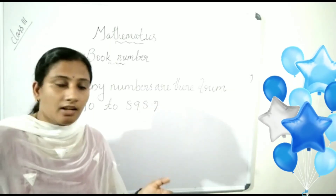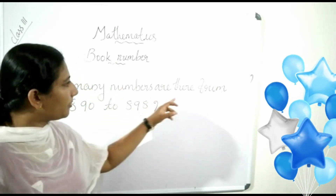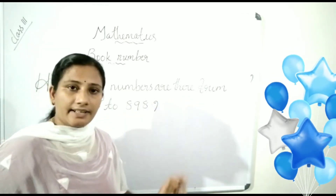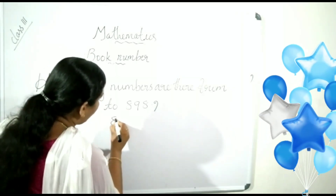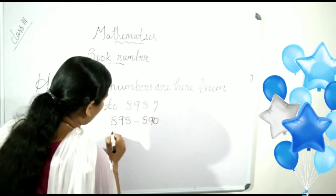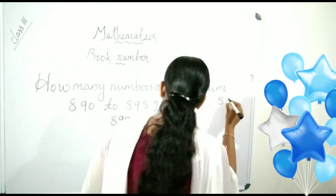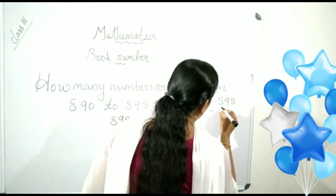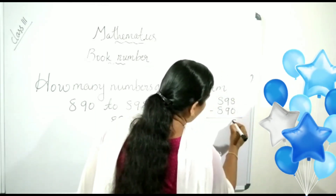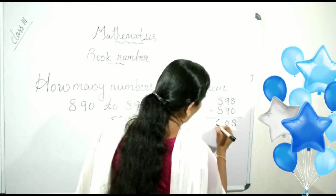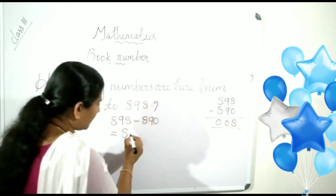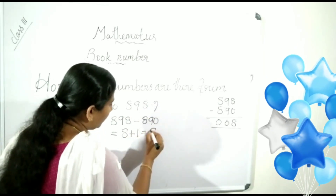Look at another question. How many numbers are there from 890 to 898? Then, first step: 898 minus 890. 8 minus 0 is 8. 9 minus 9 is 0. 8 minus 8 is 0. So, what is the answer? 8. Then, next step: add 1 with this number. We get 9.